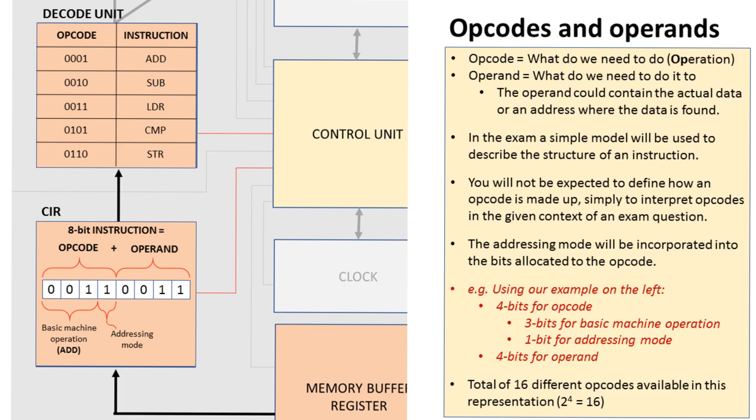By using this structure and assigning 4 bits for the opcode, we can see that with this small instruction set of 8 bits, we have a total of 16 available opcodes or operation codes. Because obviously we have 2 to the power of 4 which is 16.